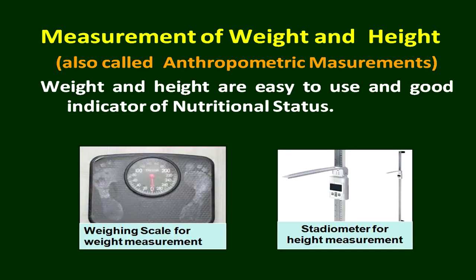Anthropometric measurements can be done anywhere — whether it is a hospital, whether it is a community, anywhere in the house. There is a simple bathroom scale on which you can stand and take the weight. Another is a stadiometer for height measurement — it fixes on the wall and you can see the flap that comes on your head when you are standing and your measurement is reflected there.